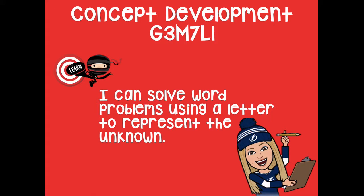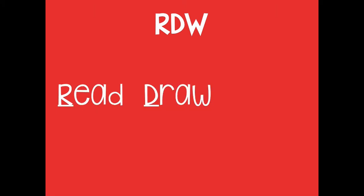Before we start our actual lesson today, I want to talk about RDW. RDW stands for Read, Draw, and Write. You're going to read the problem, draw a picture, and write a sentence that answers the question. For example, if I had two lollipops and then bought four more lollipops, now I have a total of six lollipops — so the sentence would be 'I have a total of six lollipops.' You're actually writing it in words.